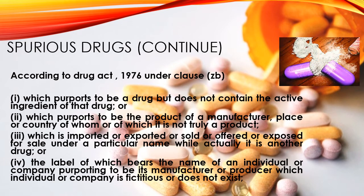According to the Drugs Act 1976, under clause zb, subclause 1: the drug claims to contain the active pharmaceutical ingredient but actually it doesn't — or maybe it is a placebo. Under subclause 2: the product claims to be manufactured in a place or country of which it is not truly a product, or which it doesn't belong to.